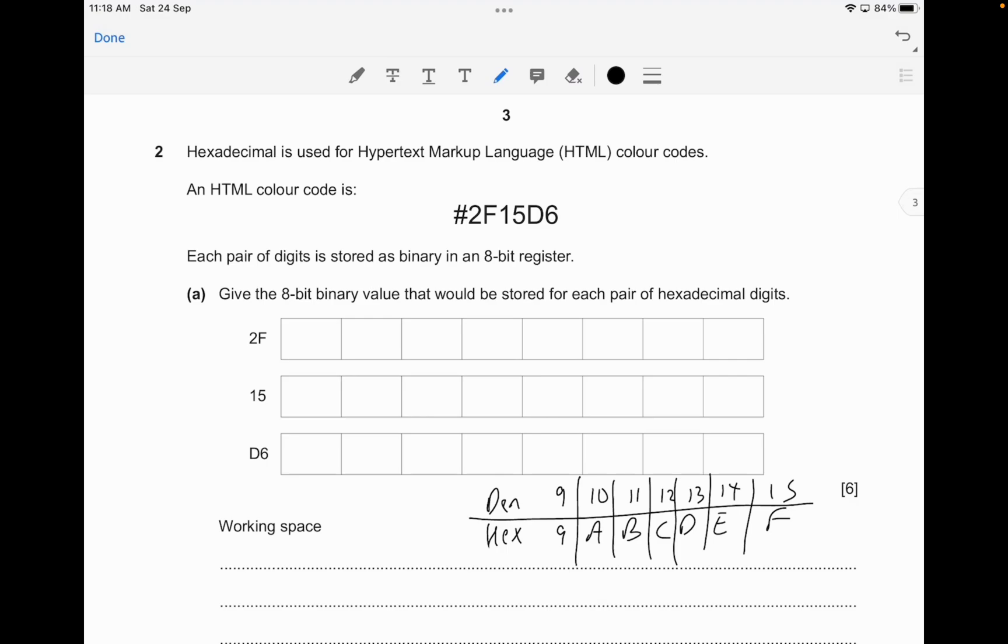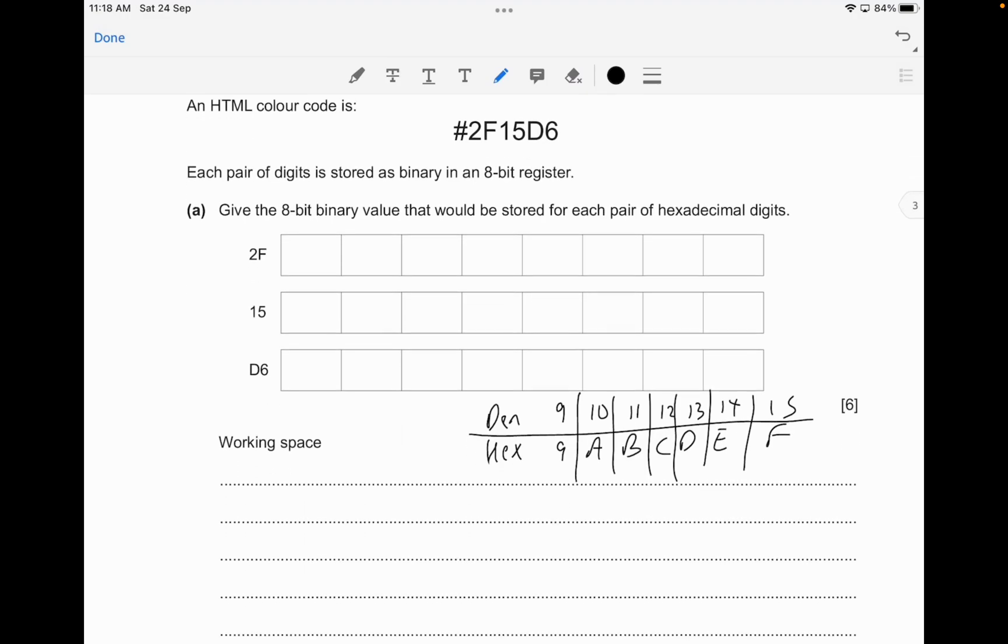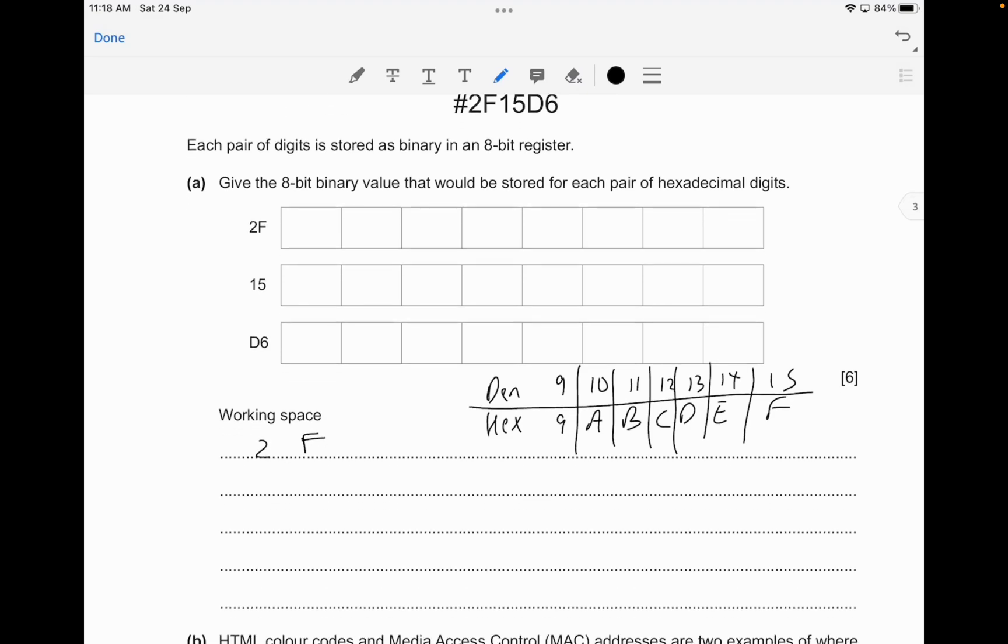The trick here is to split these hexadecimal values into two bits, technically called a nibble. A nibble is made up of four bits. We're going to take 2F and split it into two individual units, so that is four bits in this case.